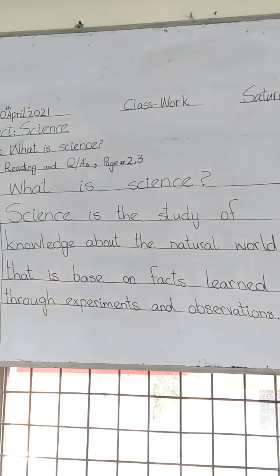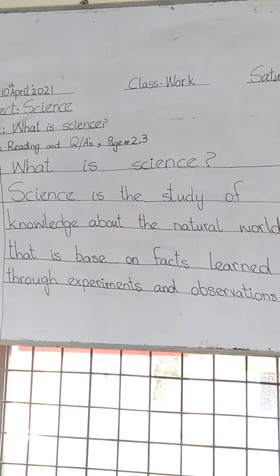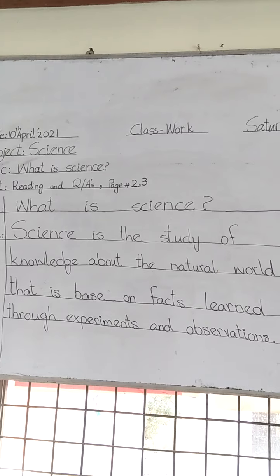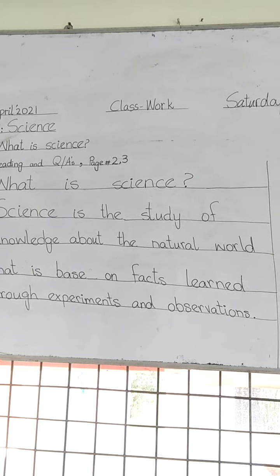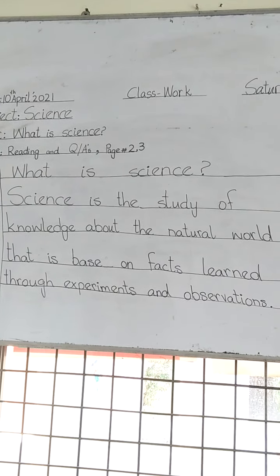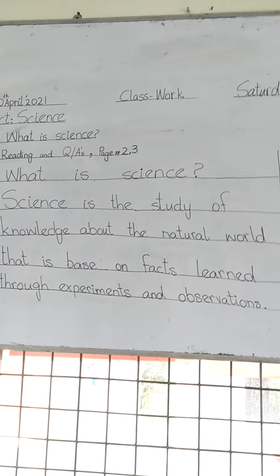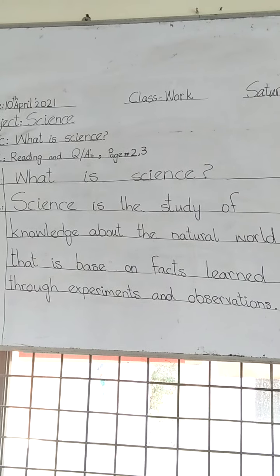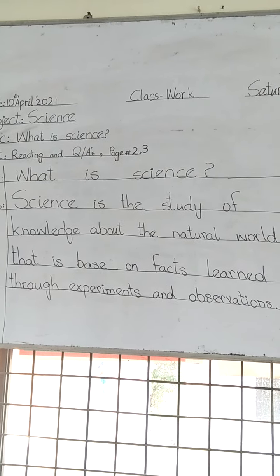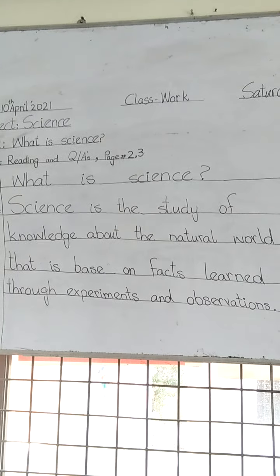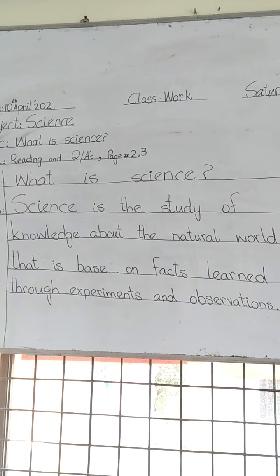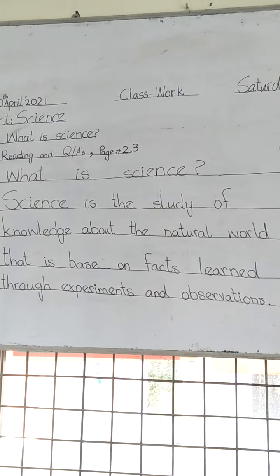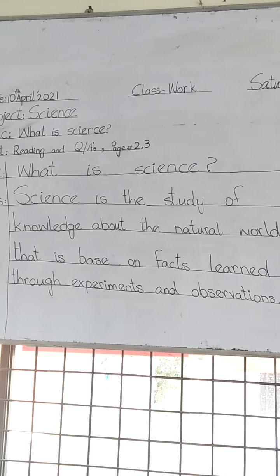Science is the study of knowledge about the natural world that is based on facts learned through experiments and observations. S-C-I-E-N-C-E: science. S-T-U-D-Y: study. K-N-O-W-L-E-D-G-E: knowledge. About the natural world — N-A-T-U-R-A-L W-O-R-L-D — that is based on F-A-C-T-S: facts. L-E-A-R-N-E-D: learned through experiments — E-X-P-E-R-I-M-E-N-T-S — and observations — O-B-S-E-R-V-A-T-I-O-N-S.